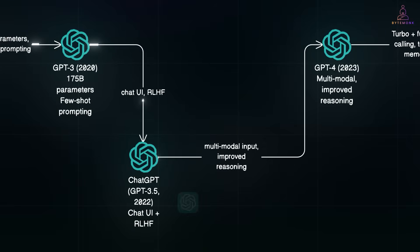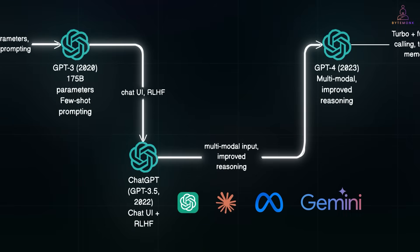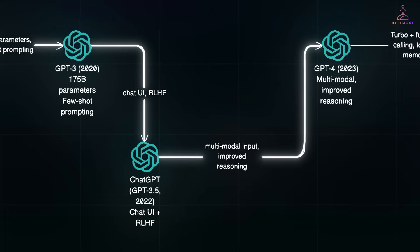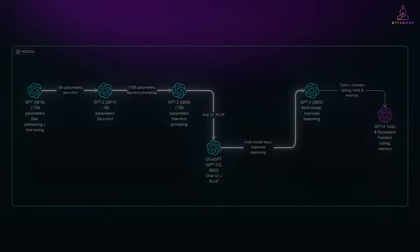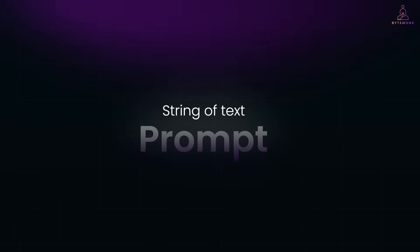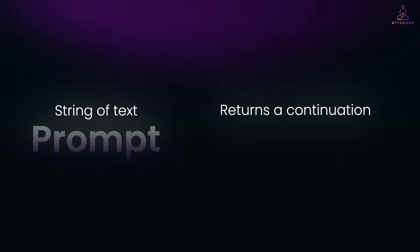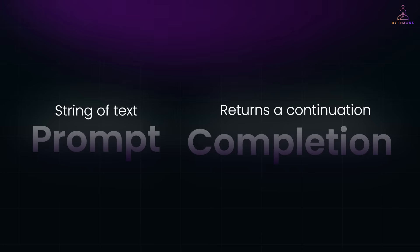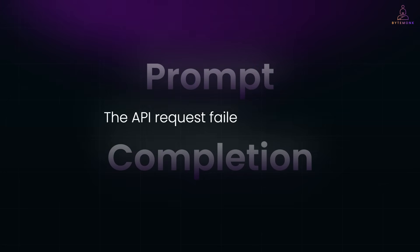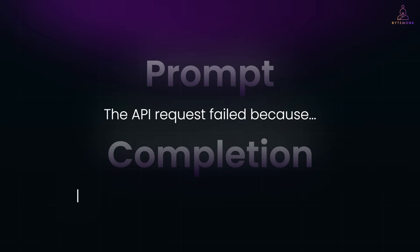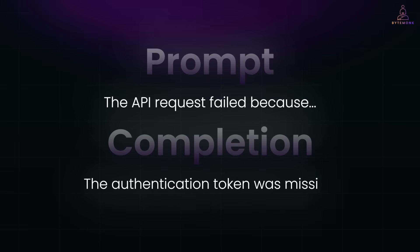Today's LLMs like GPT-4, Claude, Llama, and Gemini keep pushing this idea further — better models, better prompts, better results. At its core, an LLM is simple: you give it a string of text, that's the prompt, and it returns a continuation, that's the completion. For example, the prompt 'the API request failed because' might complete as 'the authentication token was missing.' The model just continues based on patterns it has seen during training. And that's why prompt design matters: the better your input, the more useful and accurate the output.